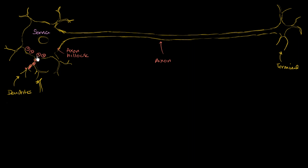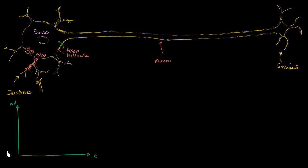So when that happens, you will have electrotonic spread — an electrotonic potential being spread. Let's say we had a voltmeter right here on the axon hillock, the hill that leads to the axon. After some amount of time, with voltage in millivolts across the membrane on the y-axis and time on the x-axis, at time zero the stimulus happens but our voltmeter reads equilibrium at negative 70 millivolts. After some small amount of time, the electrotonic potential reaches that point as positive charges spread away from each other.